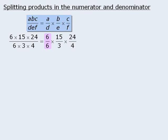From here, we can see that 6 over 6 equals 1, 15 over 3 equals 5, and 24 over 4 equals 6. From here, 1 times 5 times 6 equals 30.